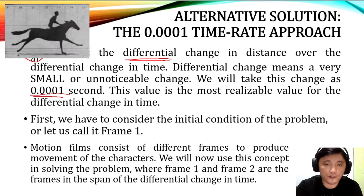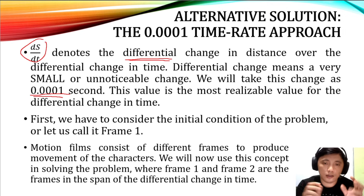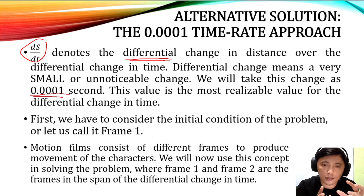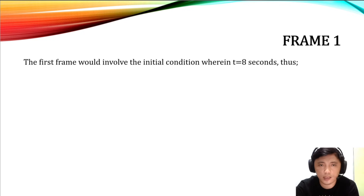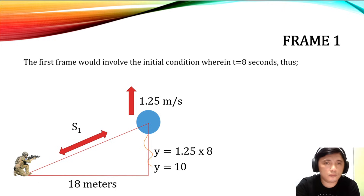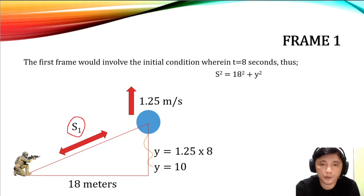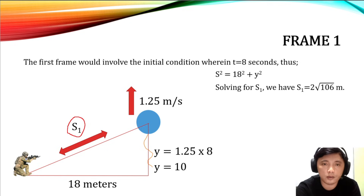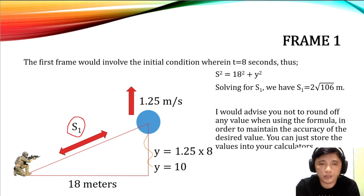Motion films consist of different frames to produce movement, and we use this concept in problem solving. For our balloon problem, we let t equals 8 seconds as frame 1. For frame 1, using the Pythagorean theorem: s squared equals 18 squared plus y squared. We already solved the initial value s1 equals the square root of 106 meters. Store this value in your calculator without rounding to maintain accuracy.